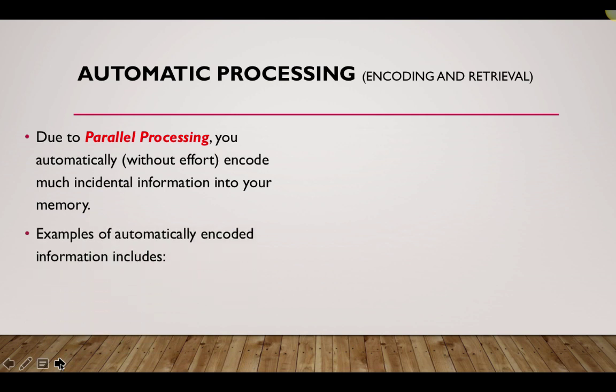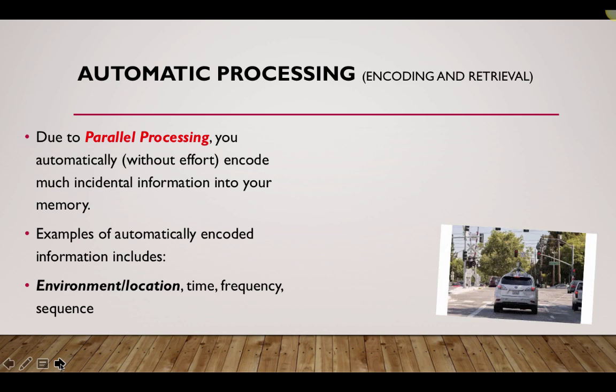Examples of automatically encoded information includes things like the environment you're in when a memory formed, the time of day that an incident took place, how often you've done something today, and in what order you did things. For example, you might be able to identify, without consciously having tried to, what route you took to school today.